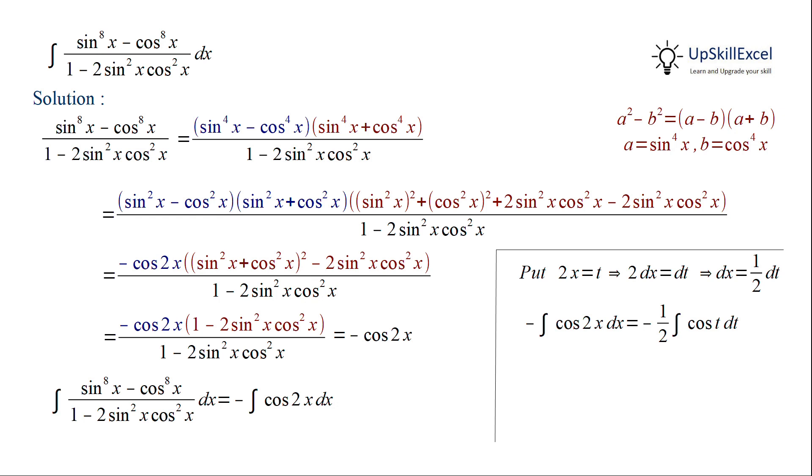On substitution, our integral will become minus half of integral cos t dt. Integration of cos t is sin t, so our integral result will be minus half of sin t plus c.